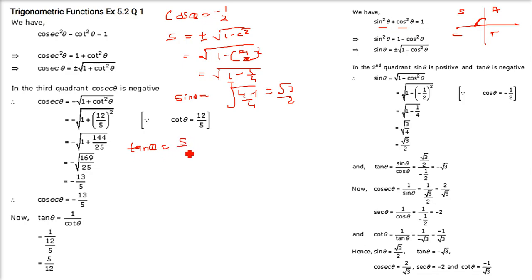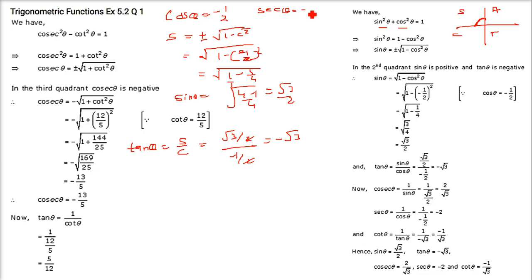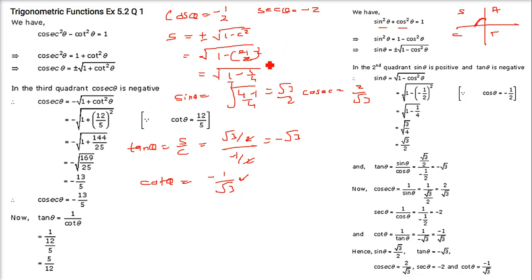Cos θ is -1/2 (given). Tan θ = sin θ / cos θ = (√3/2) / (-1/2) = -√3. Sec θ = 1/cos θ = -2. Cosec θ = 1/sin θ = 2/√3. Cot θ = 1/tan θ = -1/√3. These are all the trigonometric functions.